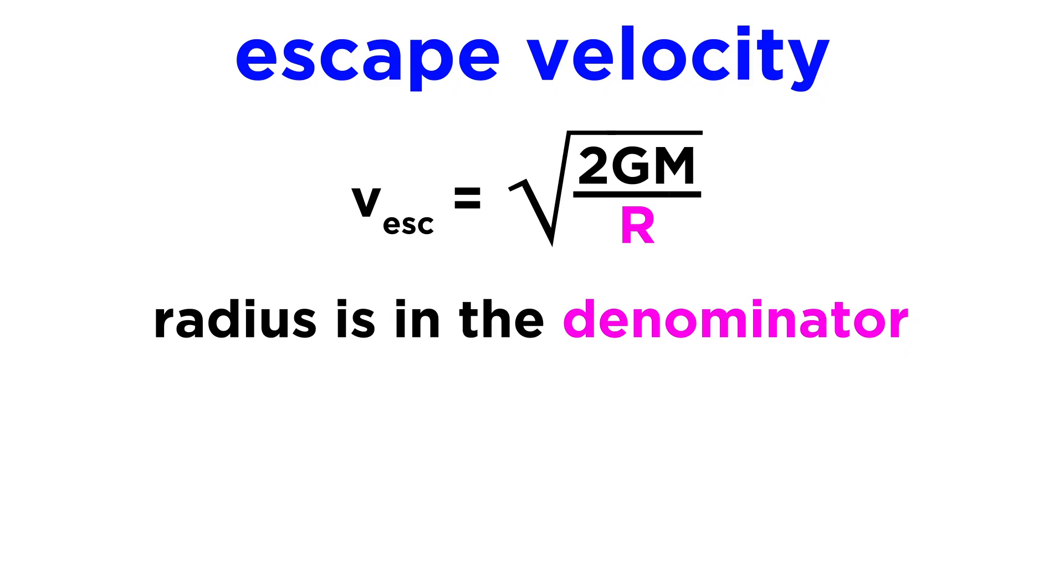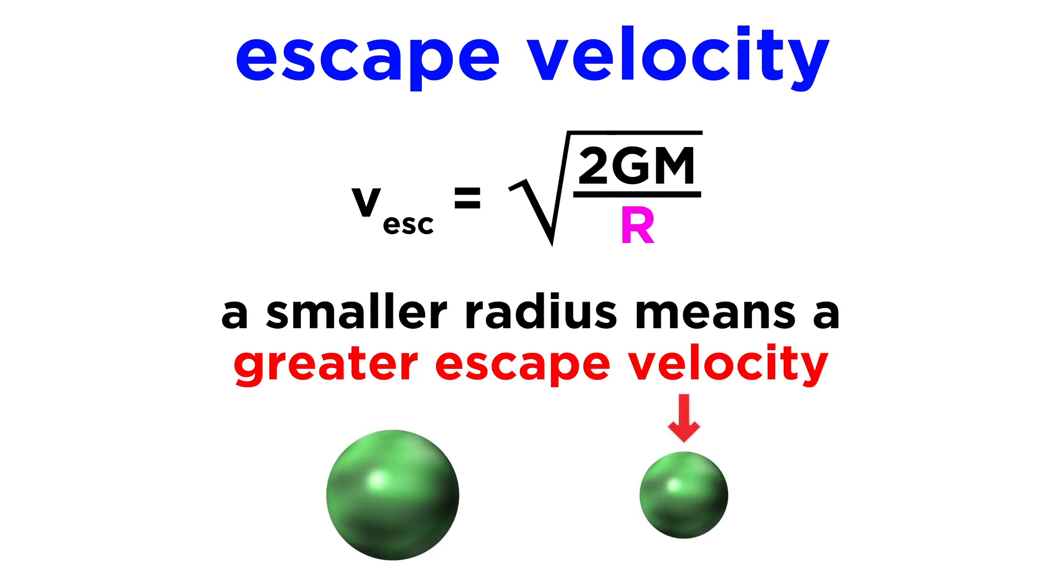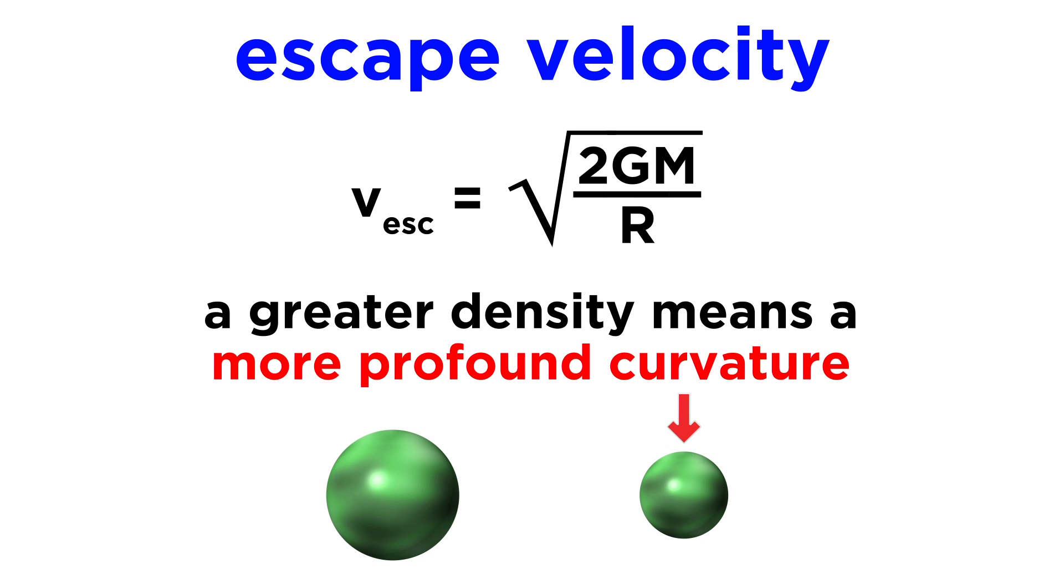But let's notice that radius is in the denominator. That means that if you contain the same mass in a smaller region, the escape velocity gets larger. This is because the increasing density of the object will result in a more profound curvature of space.